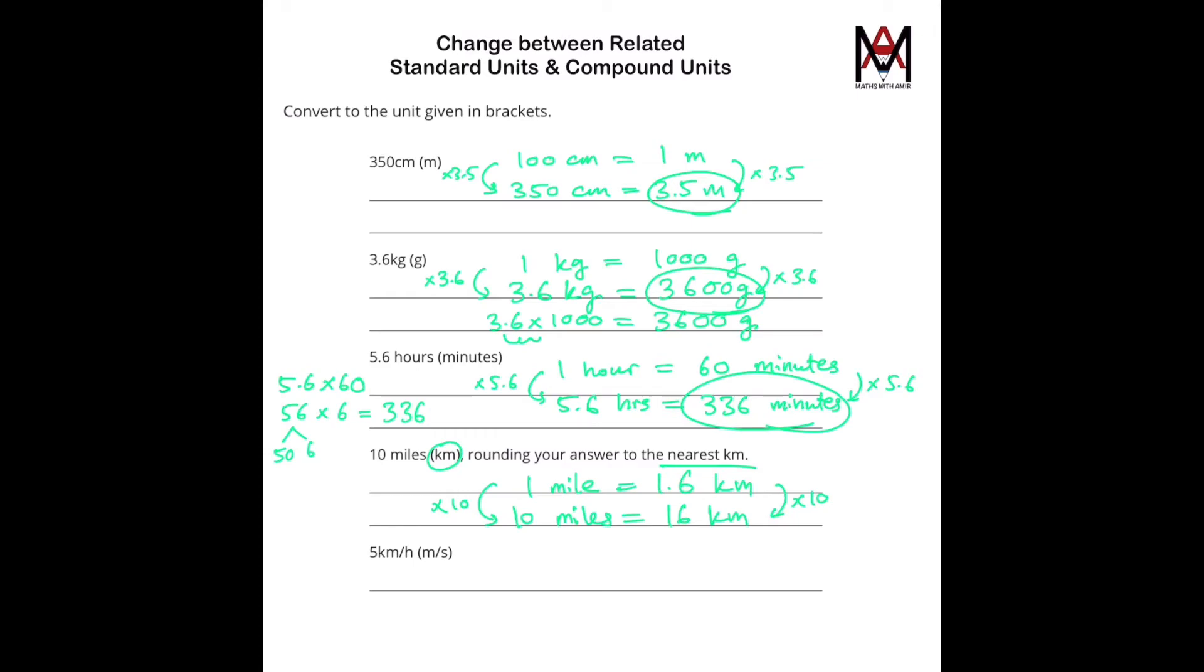Now, the next question, 5 kilometers per hour into meters per second. So let's write that like this: kilometer per hour. The kilometer needs to change to meters and hours into seconds. We know that in every kilometer, there is 1,000 meters. Every one of these equals to 60 times 60 of these. Because in every hour, there are 60 minutes, and in every minute, there are 60 seconds. So 1 hour equals 3,600 seconds.